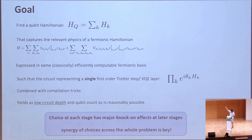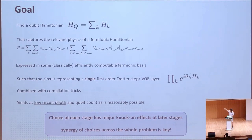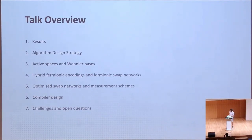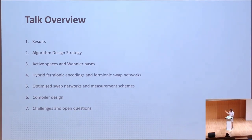We would minimize the circuit depth and the qubit count as much as we could get away with, and combine this with some compilation tricks. It's worth noting that the choice at each stage has major knock-on effects at later points in the problem, so a really important element is that you have to make these choices in a synergistic way. As a talk overview, I'll first present the results, then discuss the design strategy, covering active spaces and Wannier bases, hybrid fermionic encodings, fermionic swap networks, optimized swap networks, measurement schemes, and finally compiler design.